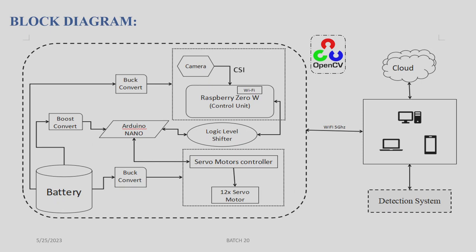This is the block diagram. You can see the battery — first, power is stored in the battery and goes to the buck converter. We have three connections supported. The boost converter is for the Arduino Nano to regulate voltage from the battery. We have a separate connection to the 12 servo motors as they need a high amount of voltage, so we are using a separate buck converter. Actually, there are three buck converters to separate the potential differences.